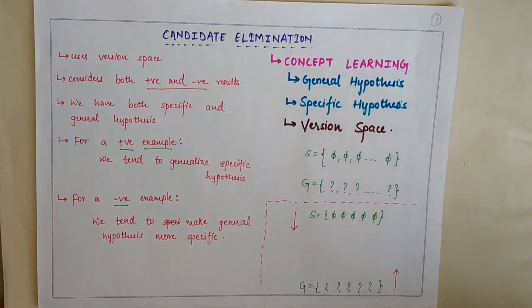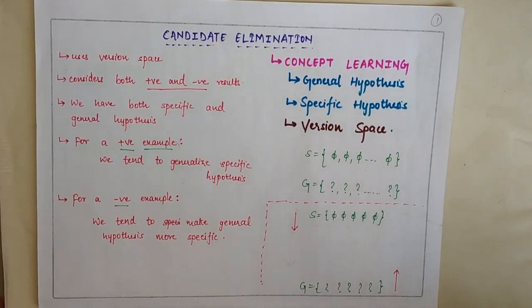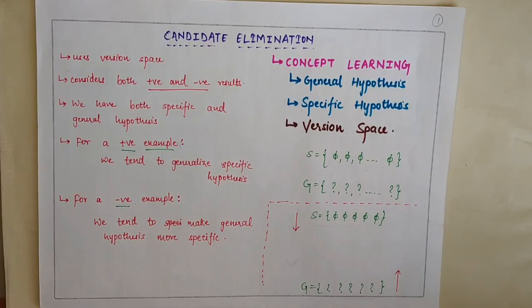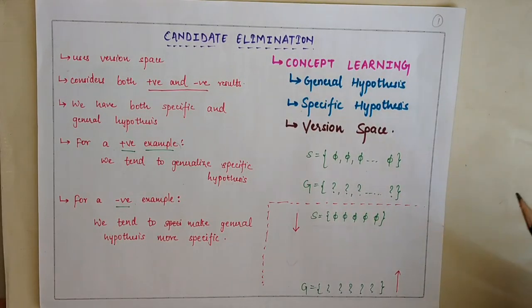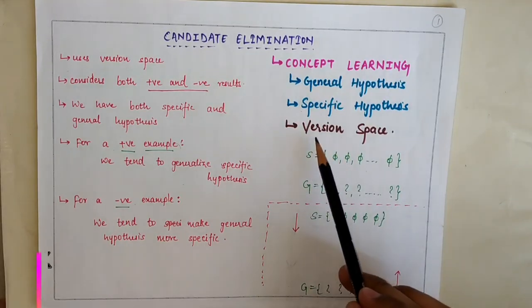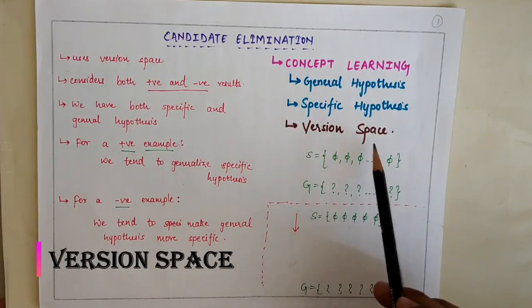Hey guys, welcome to the ML series of Code Wrestling. The topic we are going to learn today is the Candidate Elimination Algorithm. Before starting, build your basics by watching our previous video of the Find-S Algorithm — the link is mentioned in the description. Here the new term we are going to introduce is version space.